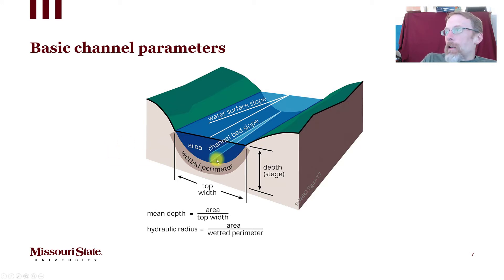We've got stage. Stage is the depth of the stream. And then the width of the stream at the water surface is also shown here. Mean depth we could calculate. The area would be the cross-sectional area of the channel divided by the top width, and the hydraulic radius, we'll talk about this more in a moment, is the area divided by the wetted perimeter.